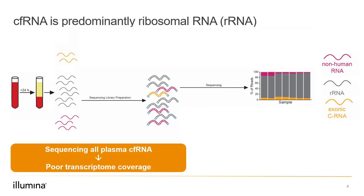Next, we wanted to identify a sample preparation workflow that would maximize the amount of transcriptome data we could get out of cfRNA. As it turns out, if you generate a library from all the cell-free RNA molecules in plasma, you wind up sequencing almost entirely ribosomal RNA — shown as gray bars in the graph — and that's not particularly interesting or informative.